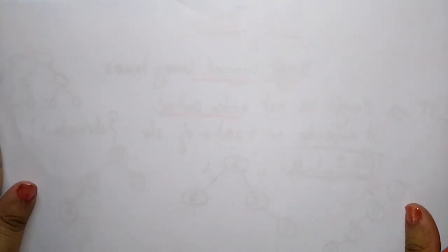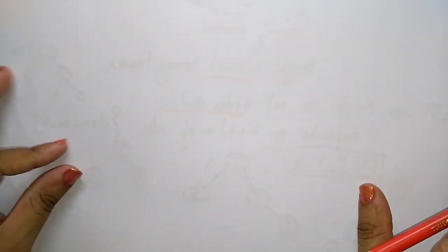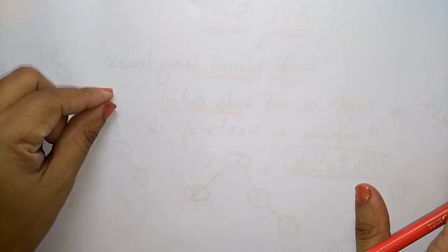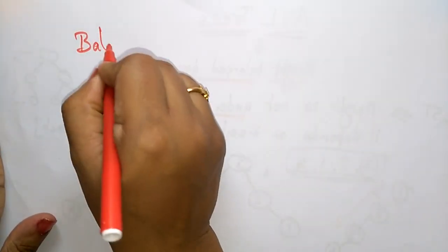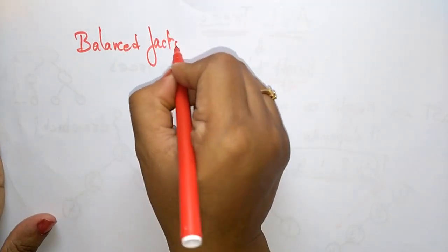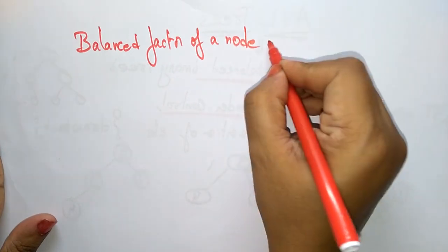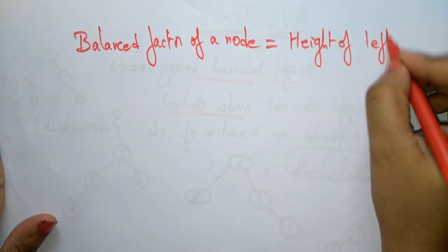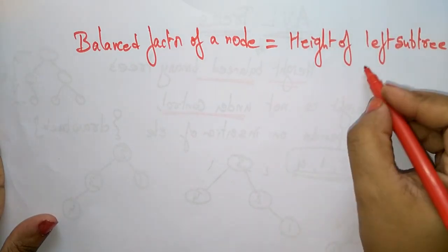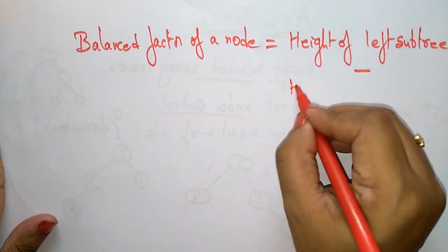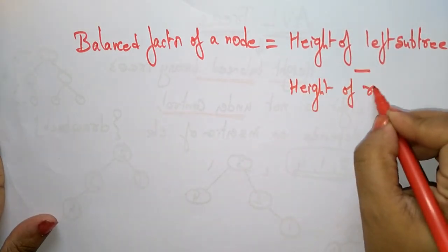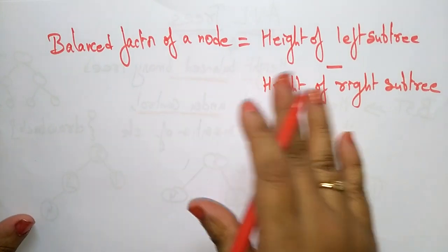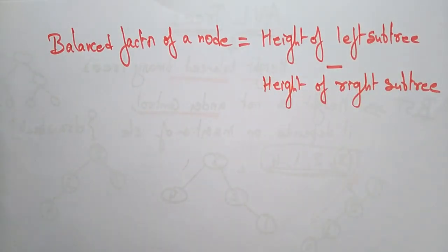For this you need to know the balance factor of a node. The formula is: Balance Factor of a node = Height of Left Subtree − Height of Right Subtree. AVL is a balanced tree in which the difference of heights of the right and left subtrees of any node is less than or equal to 1.